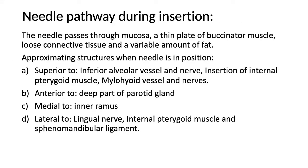When proceeding with this nerve block, the needle passes through various structures that include the mucosa, a thin plate of buccinator muscle, loose connective tissue, and a variable amount of fat. When the needle is in the final position of the block, it lies anteriorly to the deep part of the parotid gland, superior to the inferior alveolar vessels and nerve, and the insertion of the internal pterygoid muscles and mylohyoid vessels and nerve.